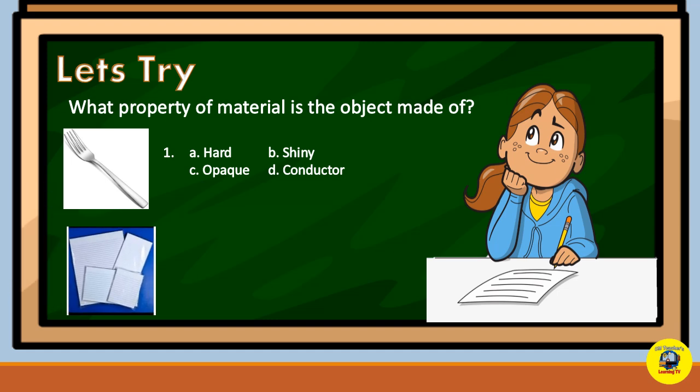How about the fourth picture? What property of material is the paper made of? Is it light, opaque, malleable, or hard?